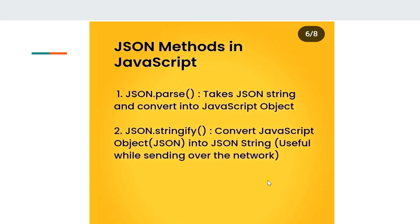The JSON methods in JavaScript: JSON.parse is a famous method we use — it takes a JSON string and converts it into a JavaScript object. Another method we use is JSON.stringify, which converts a JavaScript object into a JSON string. It's useful when sending data over the network.